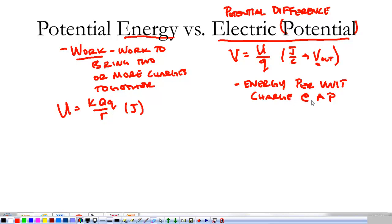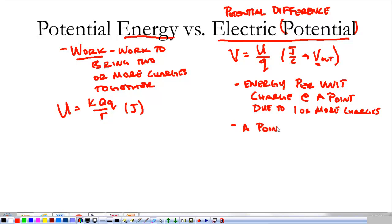Electric potential is the energy per unit charge at a point due to one or more charges. And just like the electric field, this tells me about a point in space — not something at a charge. Something about charges changes space, and the electric potential tells me about how that change took place. Electric potential is at a point in space, as opposed to between two charges.